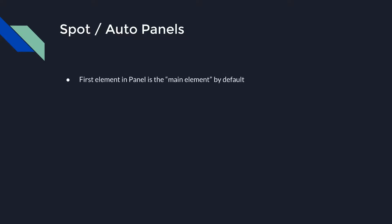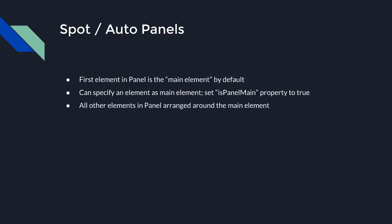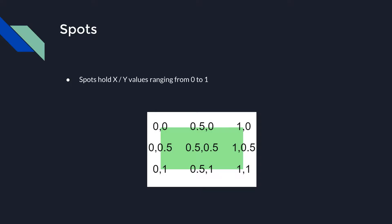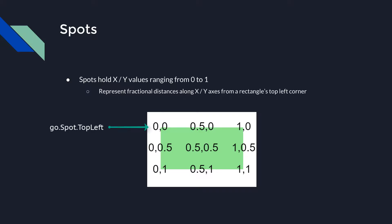Let's discuss the last two common panel types: Spot and Auto. When using a Spot or Auto panel, the first element in the panel — in our case, the Shape — acts as the main element, around which all following elements are arranged based on the rules defined by the panel type. You may set another element as the panel main element by setting the isPanelMain property to true. Spots hold x and y values ranging between 0 and 1, representing fractional distances along the x and y axes from the top left corner of a rectangle. So the preset go.Spot.TopLeft is the same as new go.Spot(0, 0), and go.Spot.BottomRight is the same as new go.Spot(1, 1).